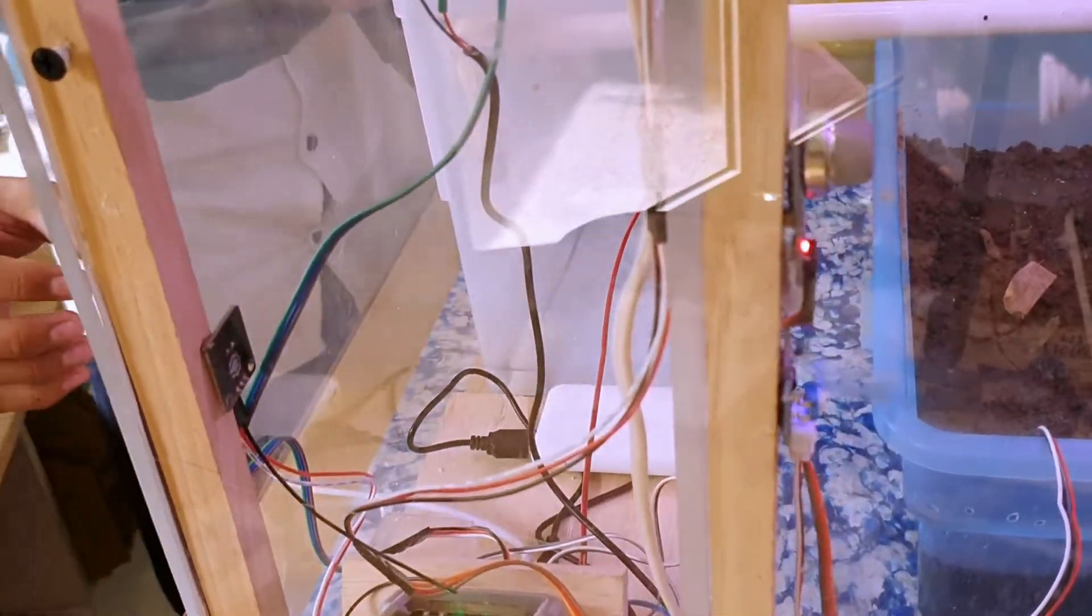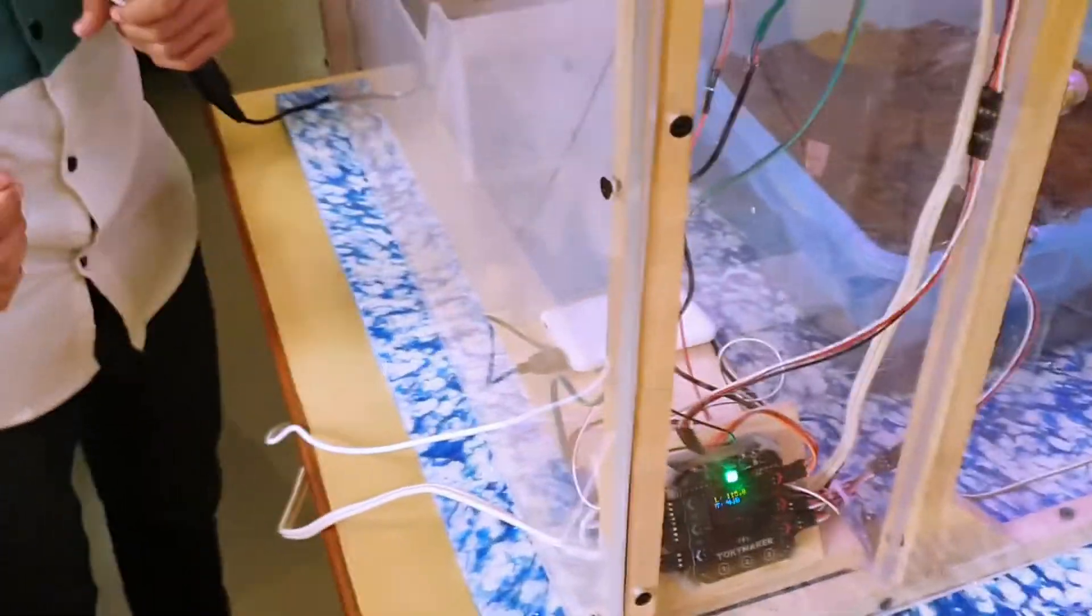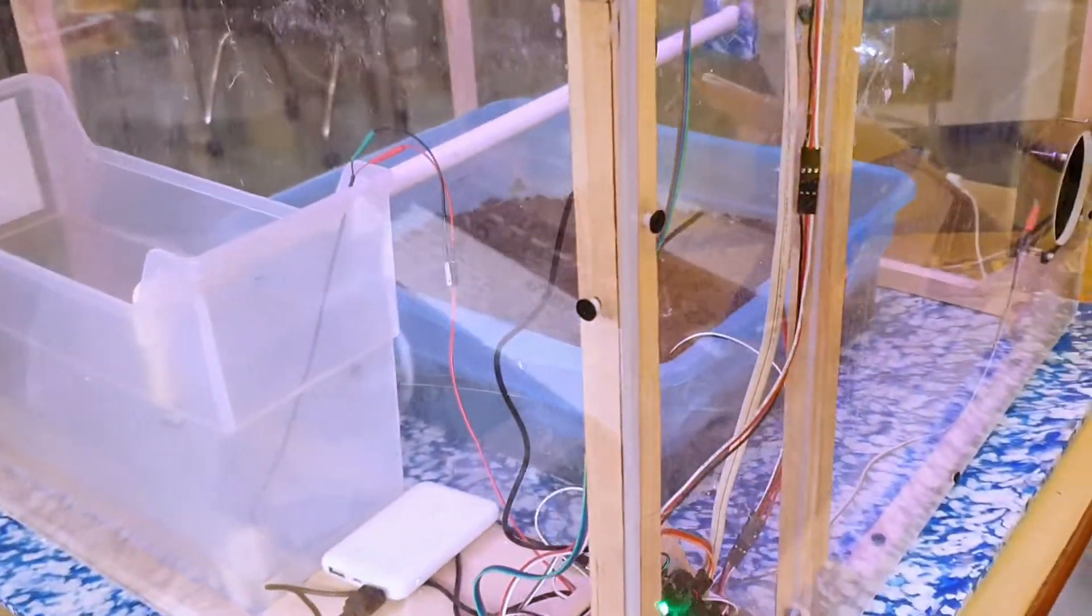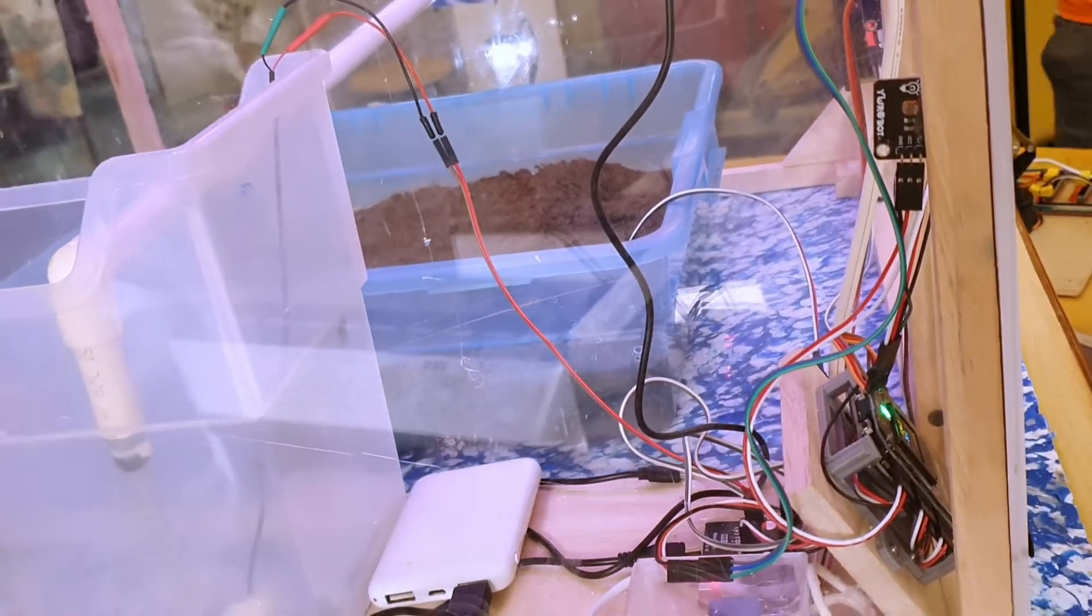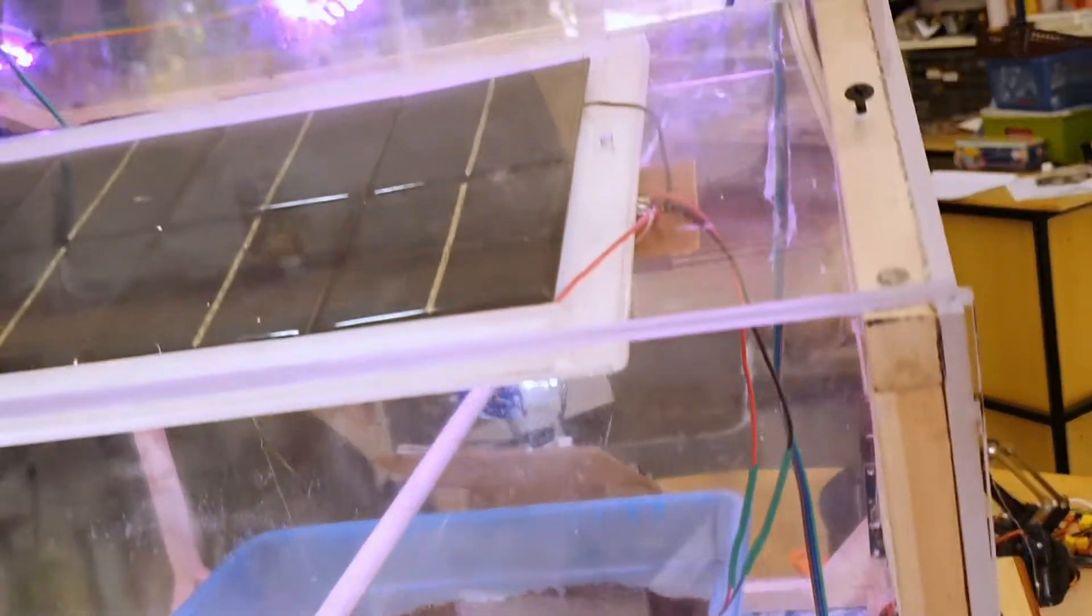Here we have the light sensor. The light sensor measures the amount of light the plant is getting. If it is not sufficient, then we can turn on the bulbs and the LEDs to provide sufficient light for the plants.